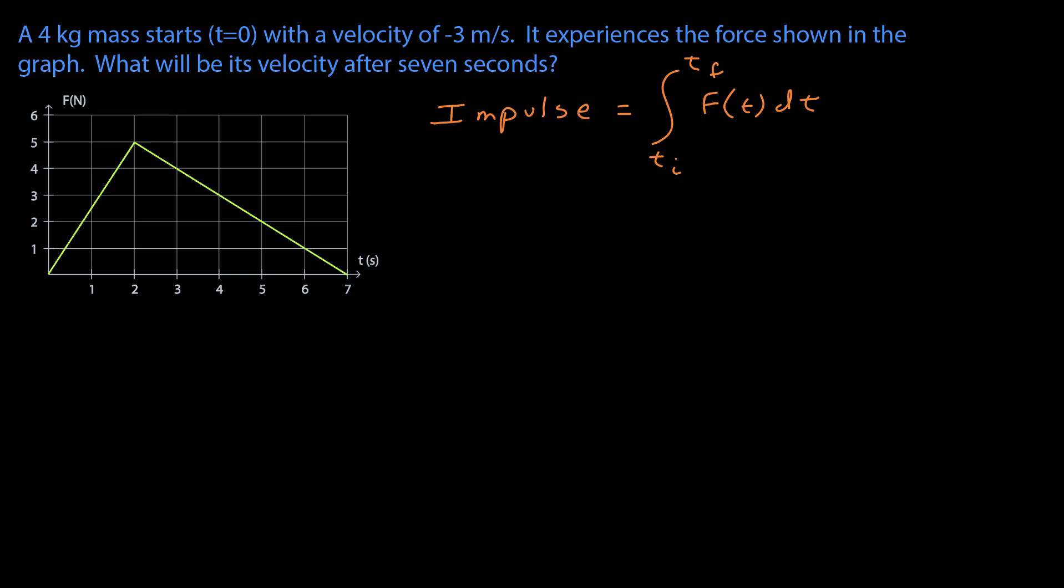This time, I'm going to go ahead and calculate the impulse first. There's no right or wrong answer here, but I have a graph of force versus time, and so I think I'm going to do that integral. From the graph, I can tell the force is varying as a function of time, so I have to do the integration. However, the integration is just the area under the curve. And since I have a simple triangle, I'm going to calculate that integral by simply calculating the area, 1 half base times the height. The base is 7 seconds, the height is 5 newtons, and so the 1 half base times height would be 17.5 newton seconds.